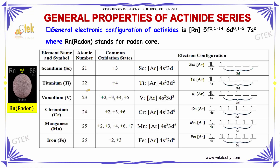Here is the general configuration of actinides. It's [Rn] 5F⁰⁻¹⁴, 6D⁰⁻² , 7S². Rn stands for the radon core. Here are the elements with their atomic numbers, common oxidation states, and electronic configurations.